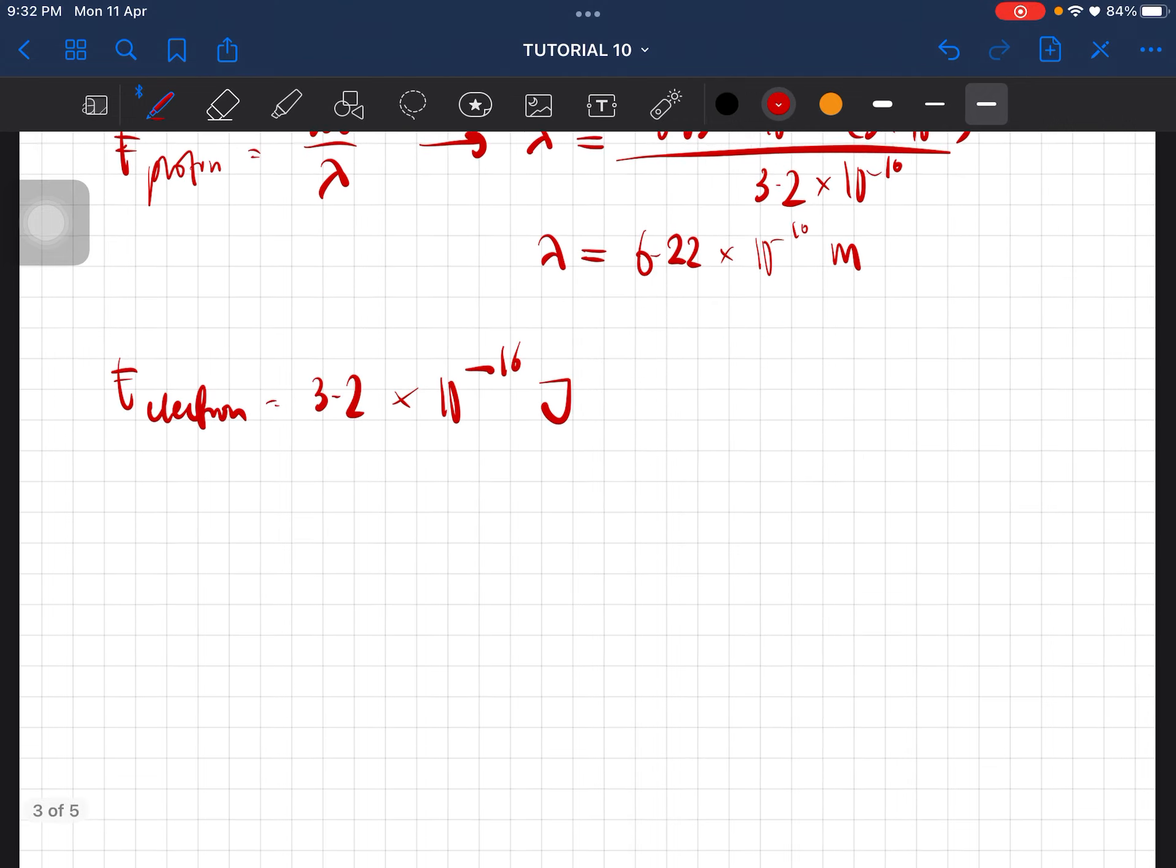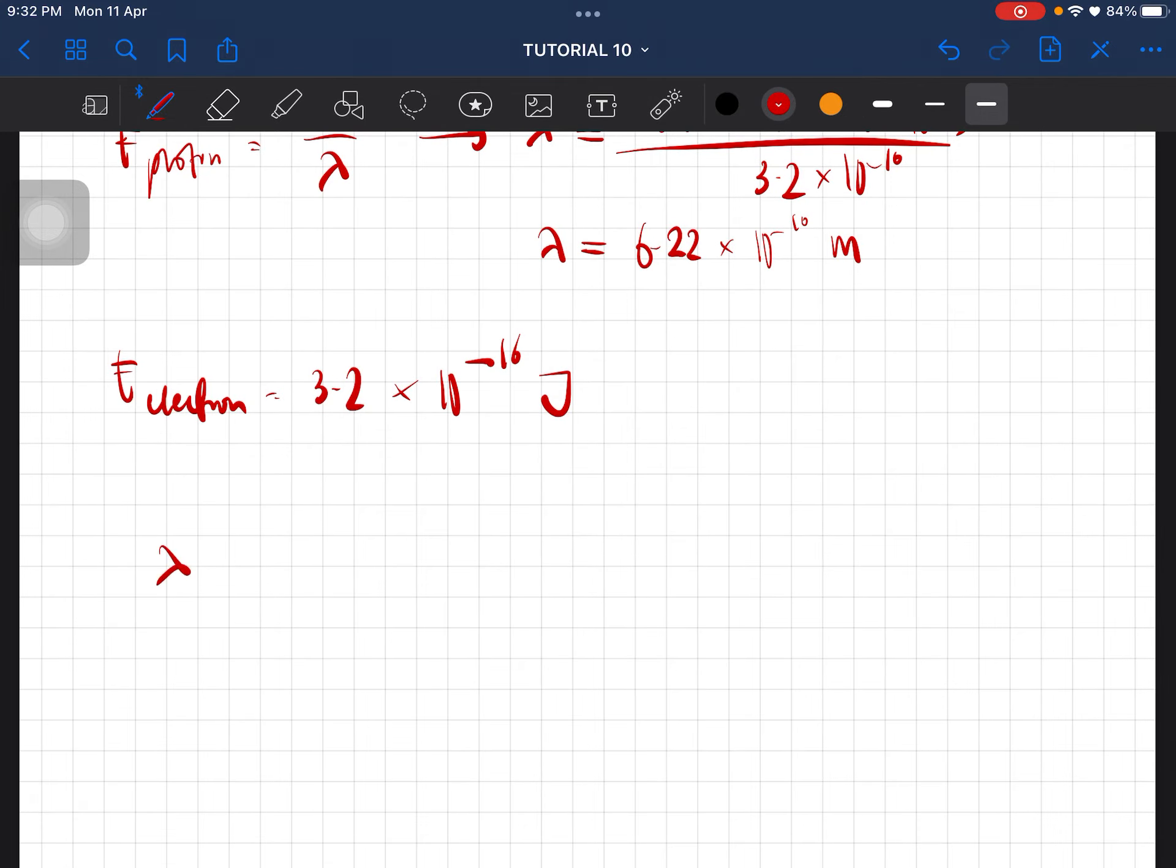So for this one, we are going to use this equation: h over square root of 2mK. Where did I get the kinetic energy? We know that the kinetic energy is equal to e electron times the voltage.